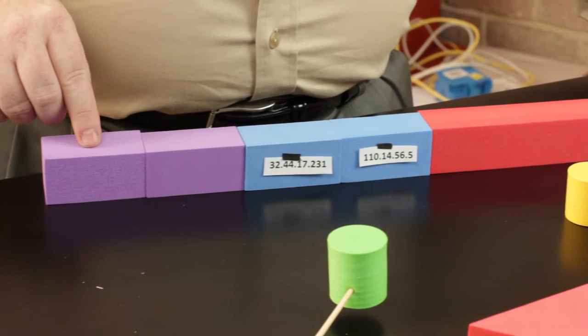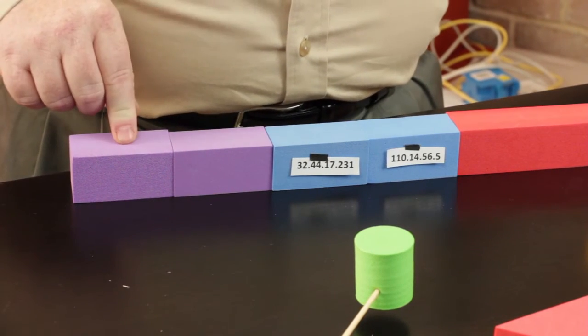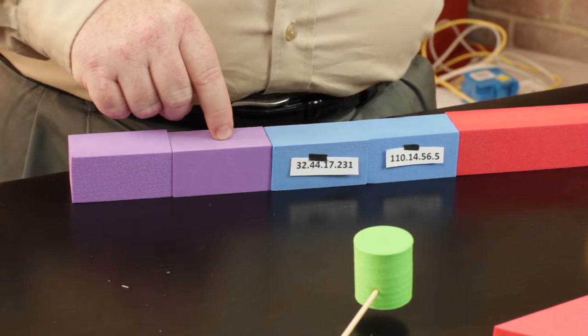And on this frame, it's going to have the destination MAC address of the router, as well as the source MAC address of the computer itself.